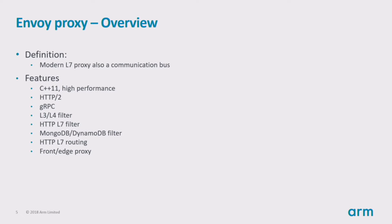Envoy has L3 and L4 filters. This filter chain mechanism allows developers to write filters and perform different TCP proxy tasks easily. Envoy also provides HTTP L7 filters. Some of these filters can be inserted into the HTTP connection management to perform advanced tasks such as caching, rate limiting, and forwarding. For database sniffing, Envoy provides a sniffer filter for MongoDB and DynamoDB to get status from their local databases.